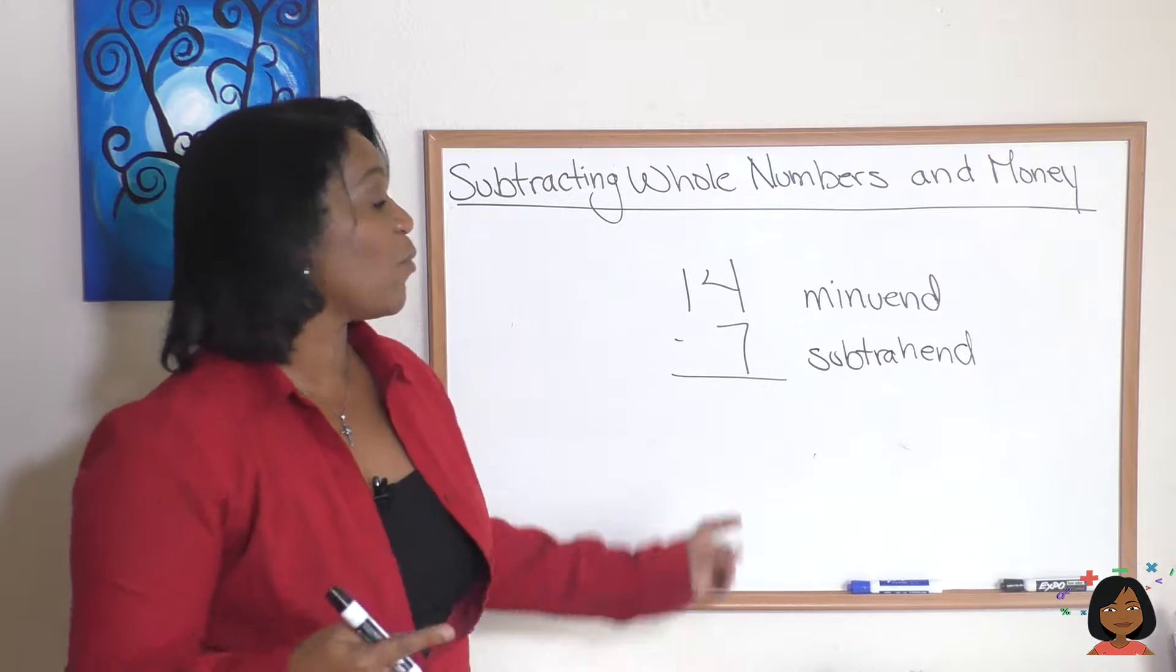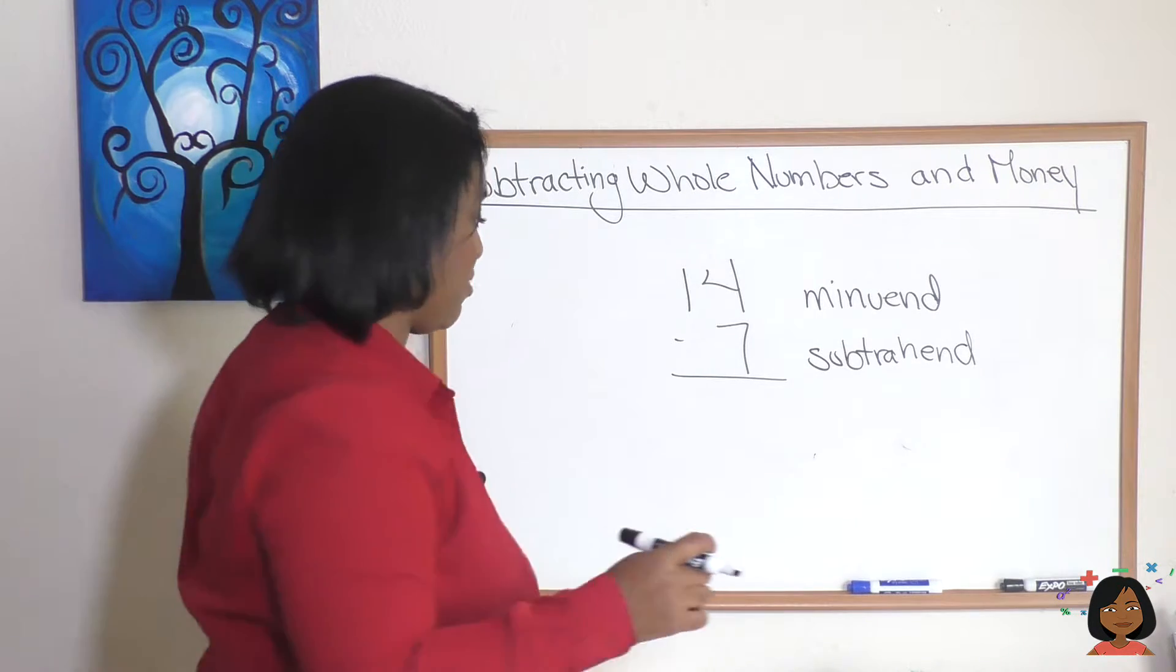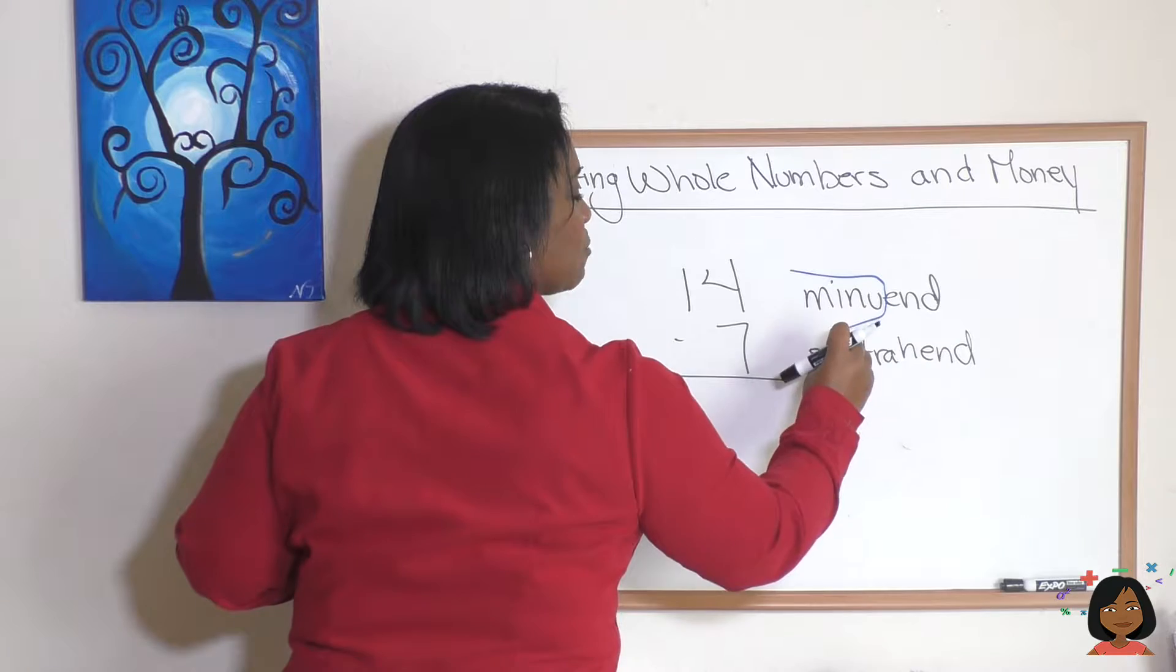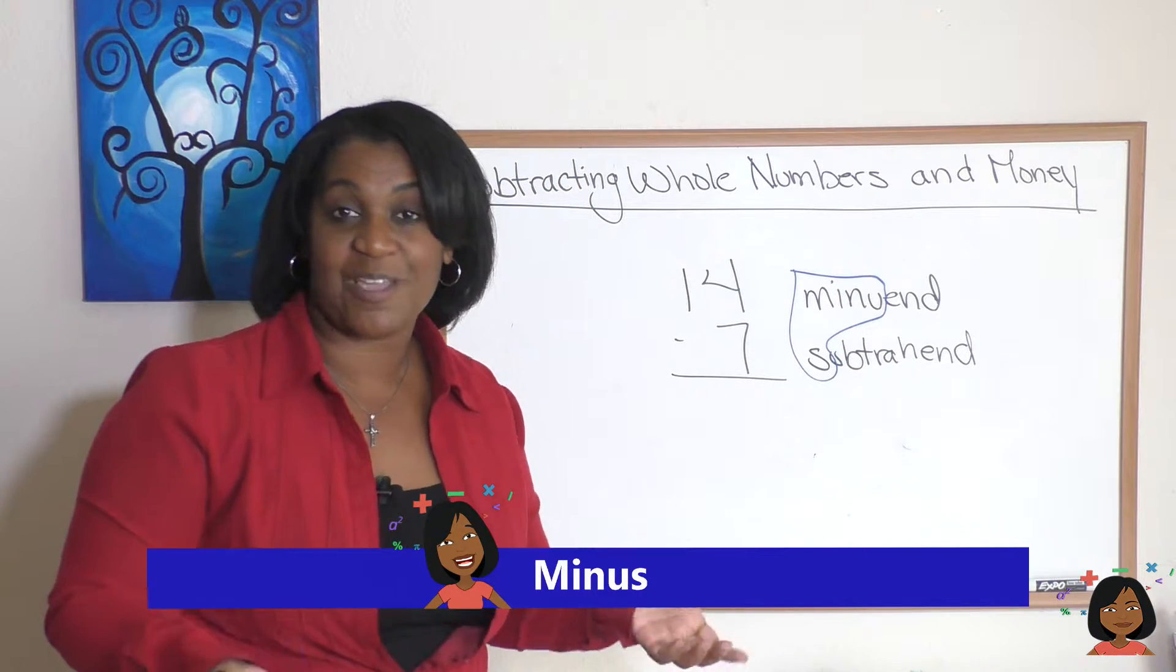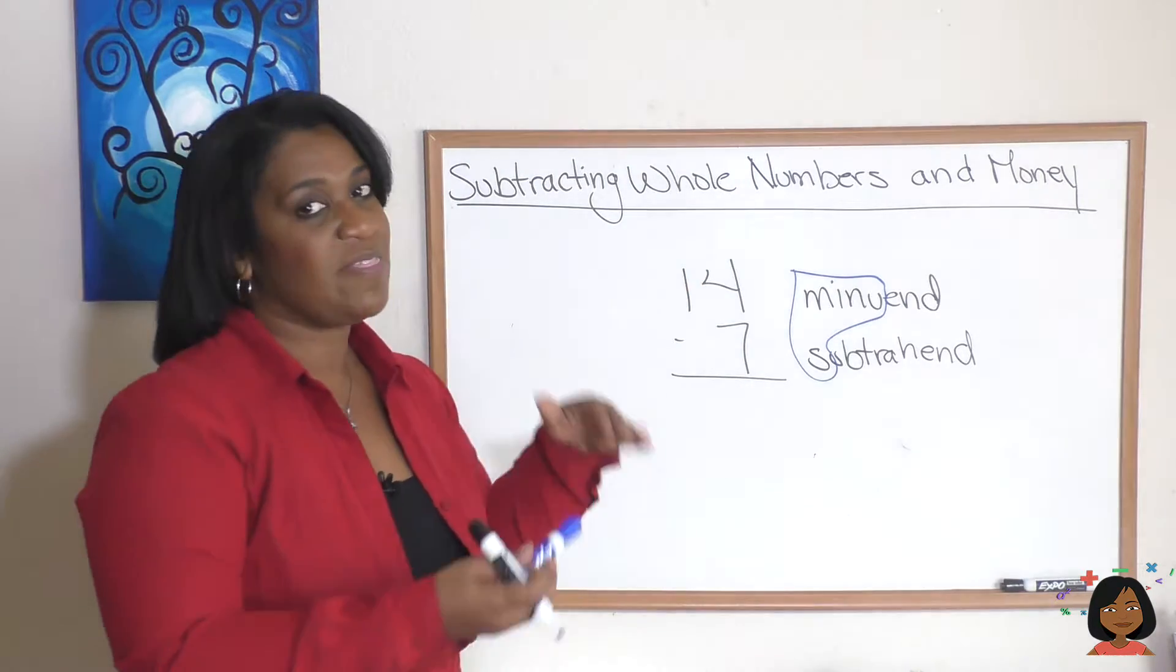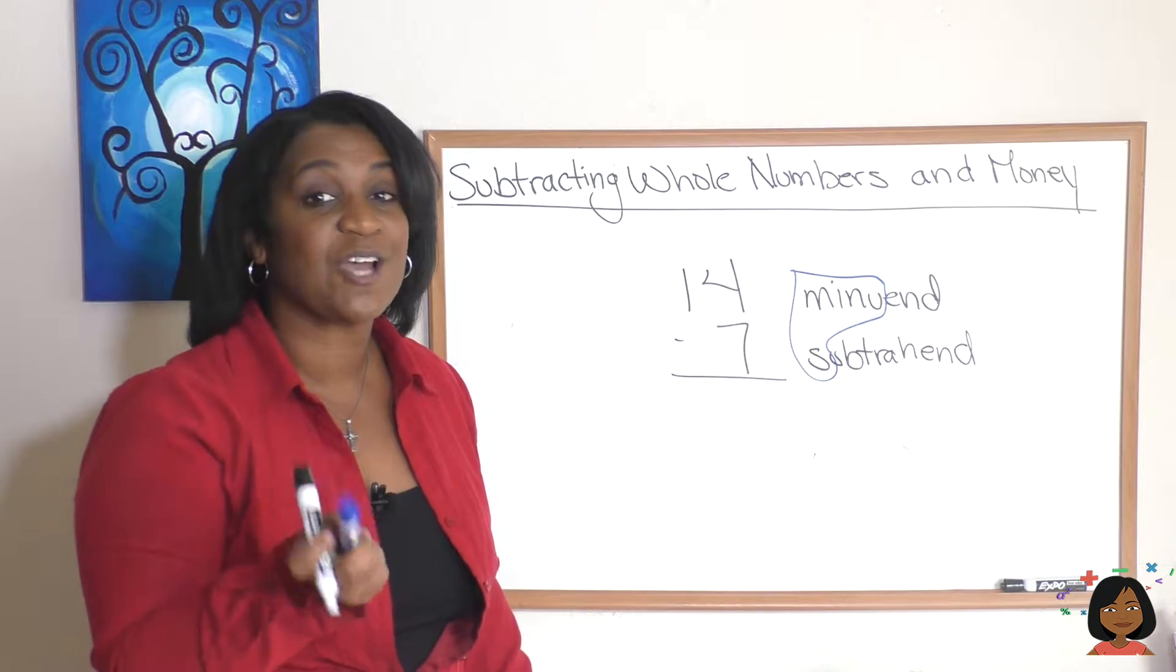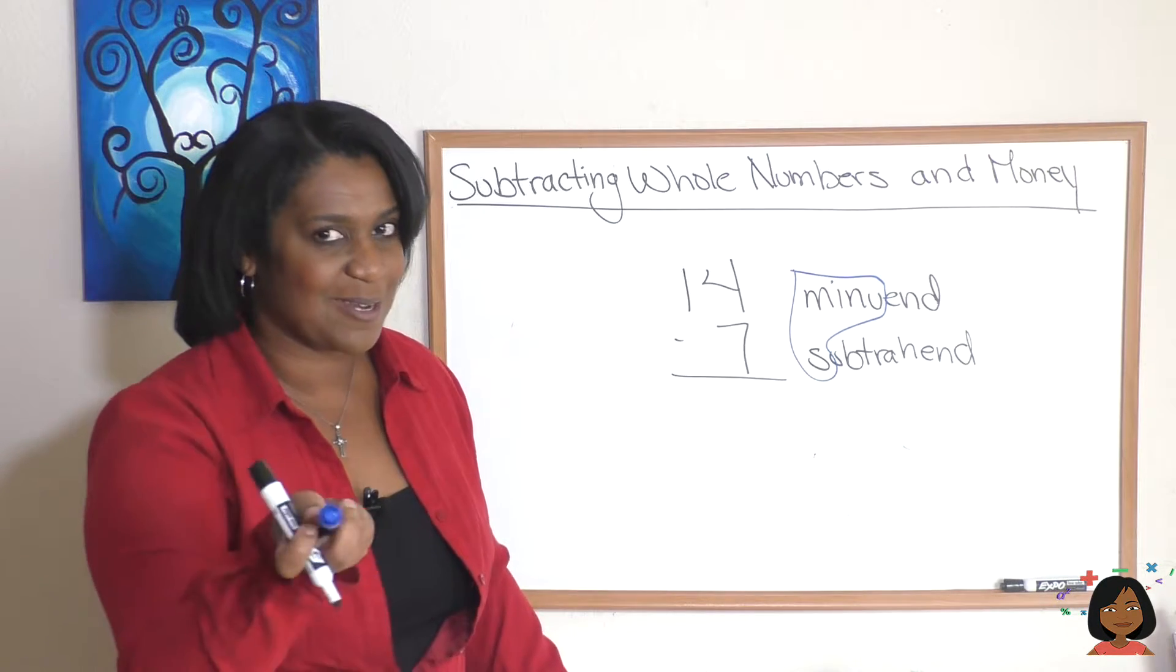If you look close you might notice something: minuend and subtrahend. If you pull certain letters out it spells the word minus and really isn't that what subtraction is doing, we are minusing something. That'll help you remember the M has to always be the first one, minuend then subtrahend. This will be important when we get to talking about missing numbers in subtraction.